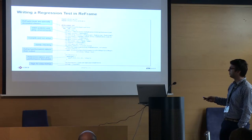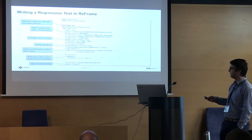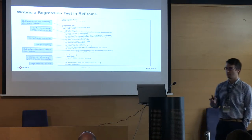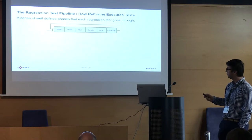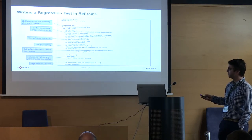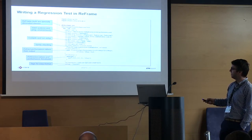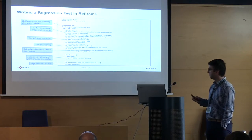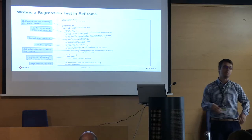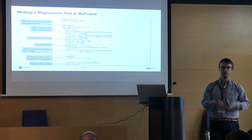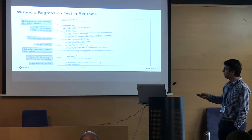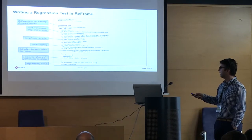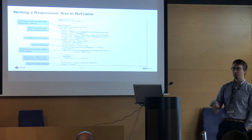You specify the executable options, extra modules to load, and how many GPUs per node to use. Then comes the sanity patterns to look at — it's an expression that is lazily executed, essentially like a grep. We have what we call performance patterns, which is a dictionary where the keys are the performance variables you want to look at. Your test might output execution time, gigabytes per second, gigaflops per second. You list them here with an expression for how you extract this information from the output.